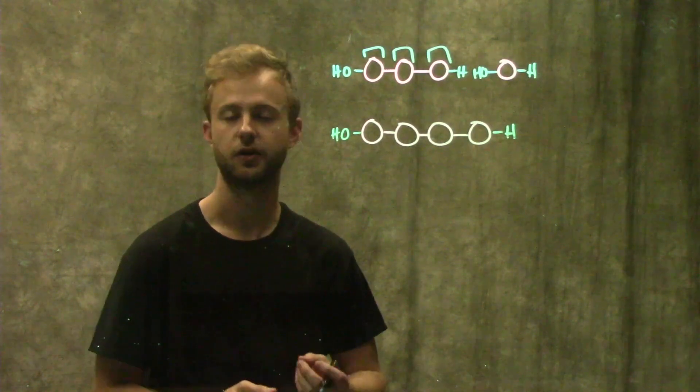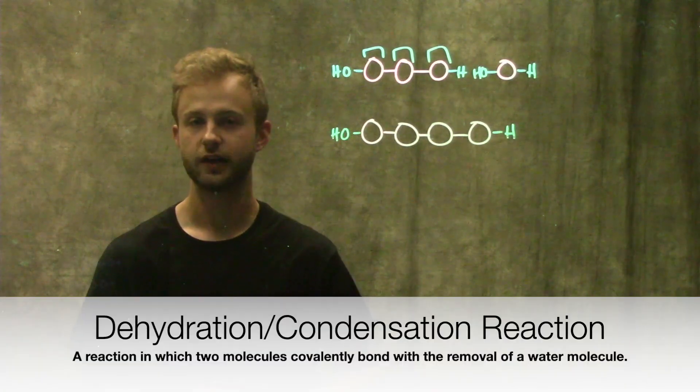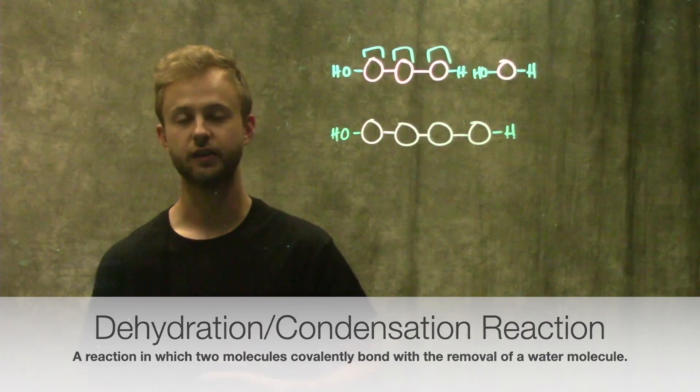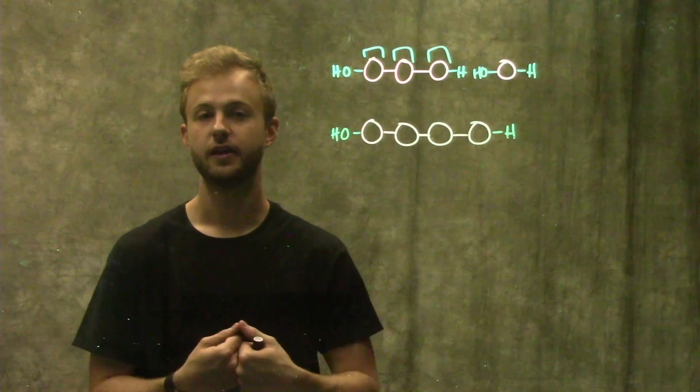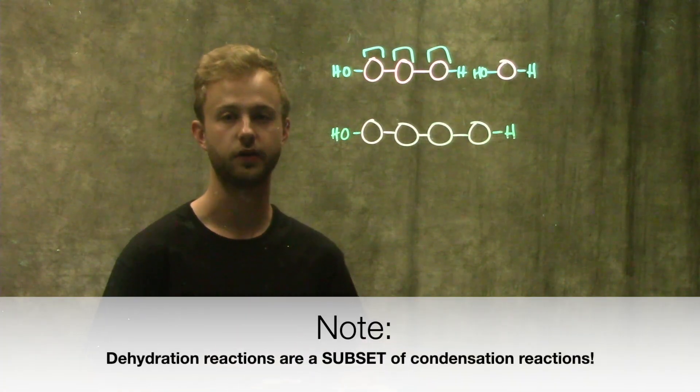Now we're going to look at how we put these monomers together. This is done through a dehydration reaction or a condensation reaction, which are two ways of saying the same thing. Condensation because we're condensing two pieces into one, and dehydration because it occurs with the loss of a water molecule.